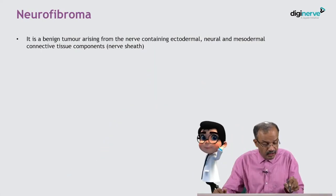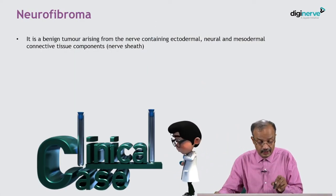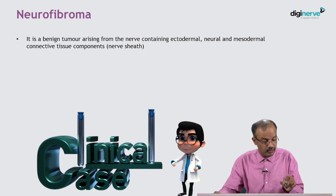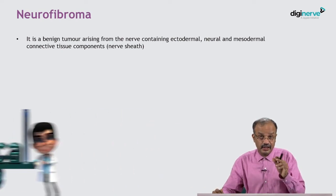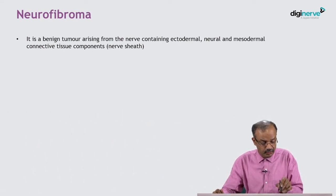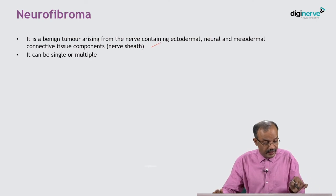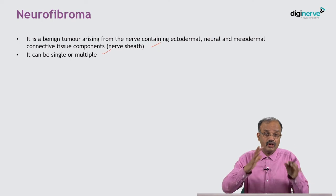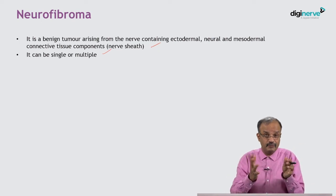Now we come to the important topic — neurofibroma. To discuss it, you should have a clear understanding of neuroma and fibroma. Neurofibroma is a benign tumour arising from the nerve, containing ectodermal, neural, and mesodermal connective tissue components. It arises mainly from the connective tissue of the nerve sheath. It can be single (solitary neurofibroma) or multiple (neurofibromatosis), and may also be familial.